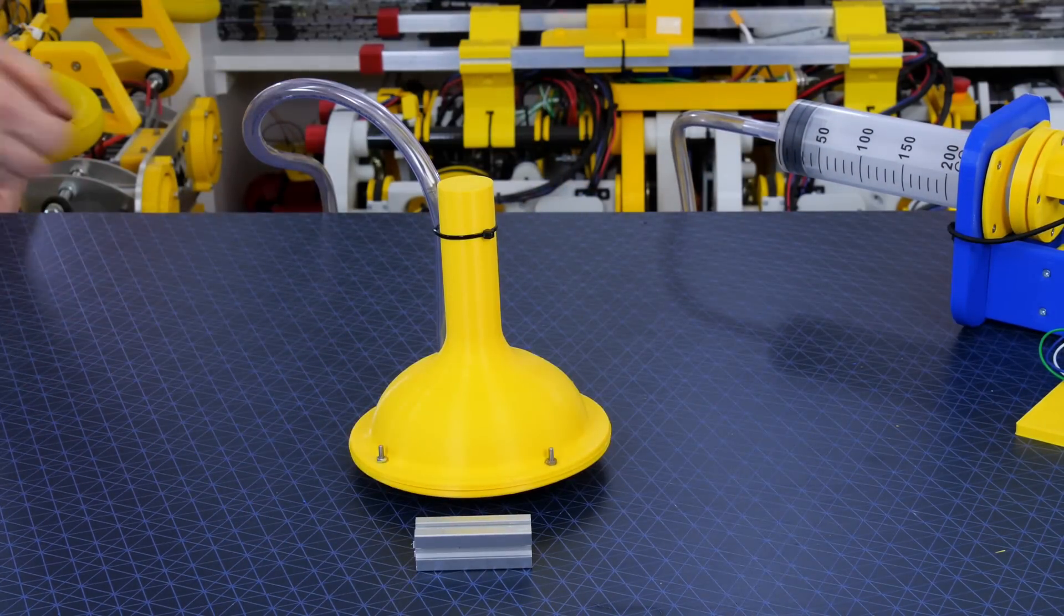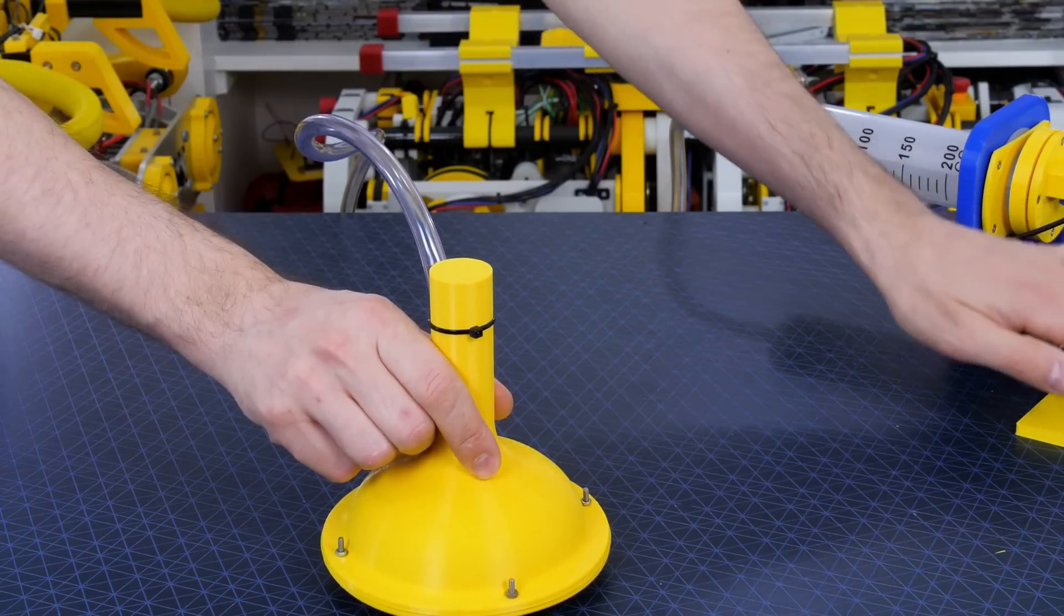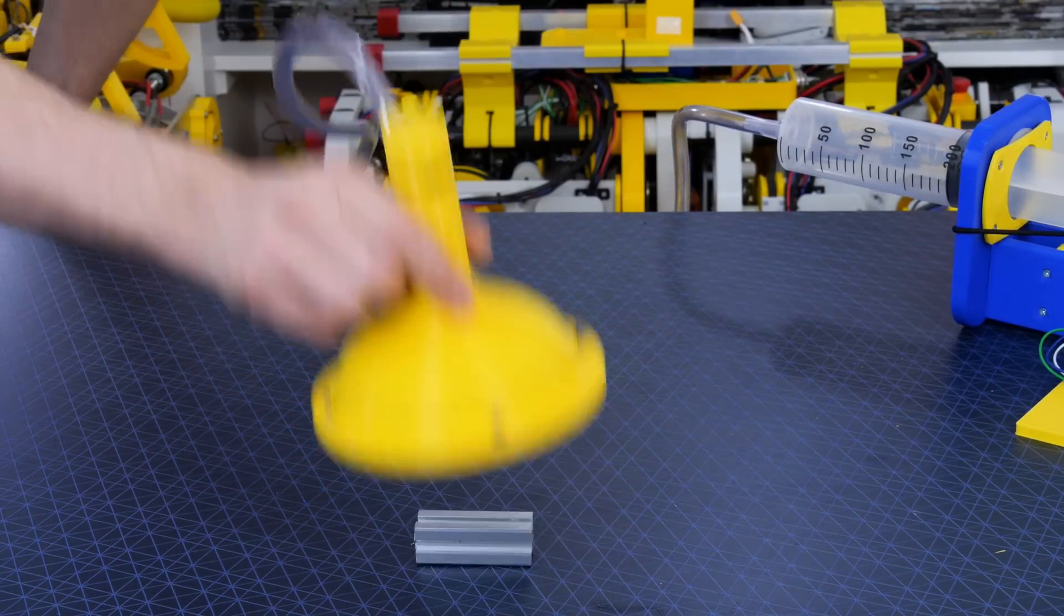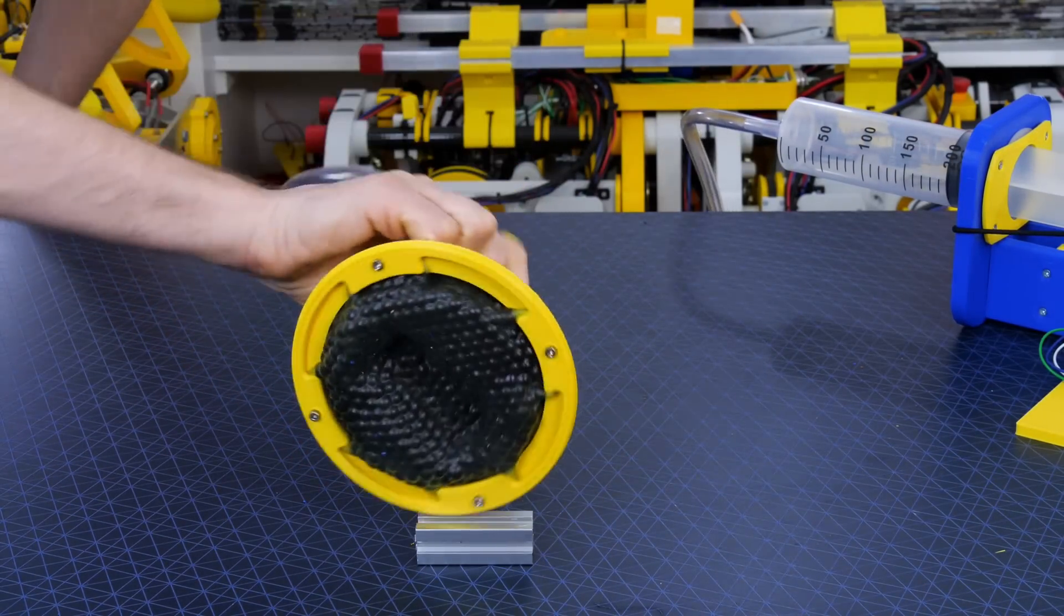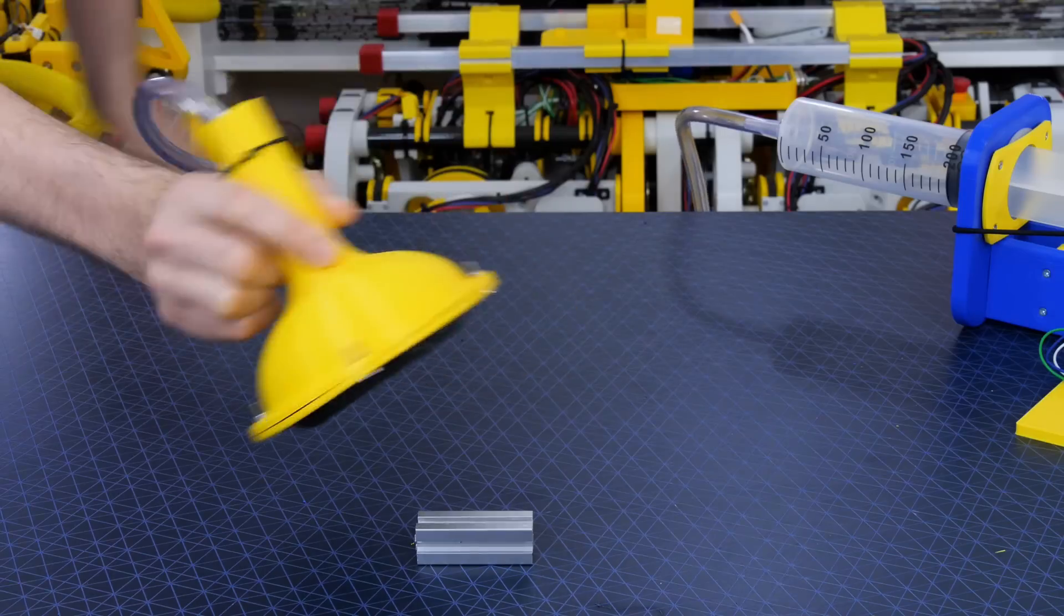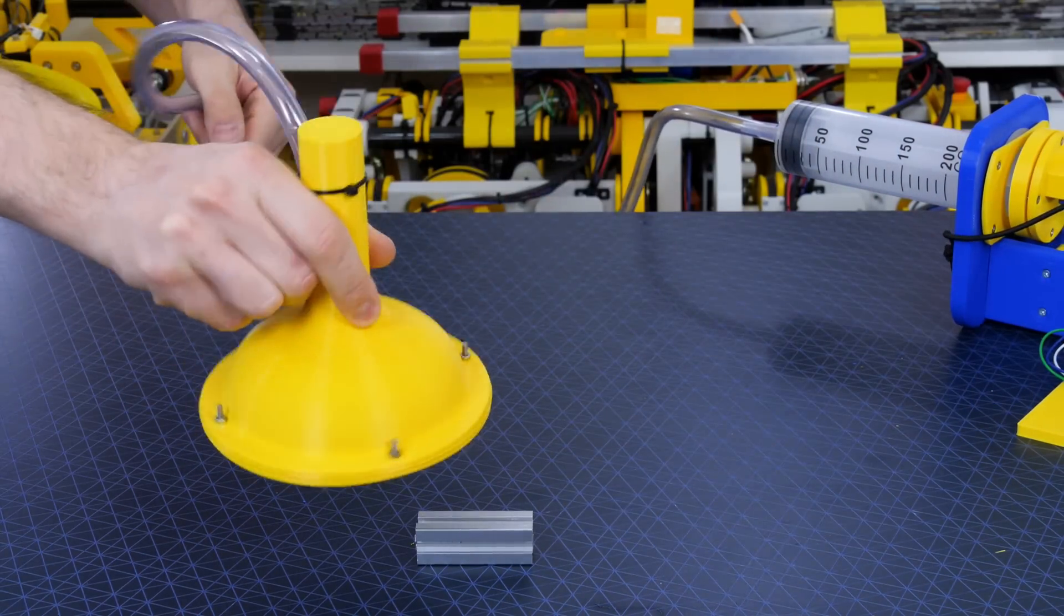I want to try something smaller and squarer so I've got an offcut from some 2020 aluminum extrusion which has got lots of features in. That doesn't seem to work at all well although you can see the indent left in the rigid membrane when I suck the air out.